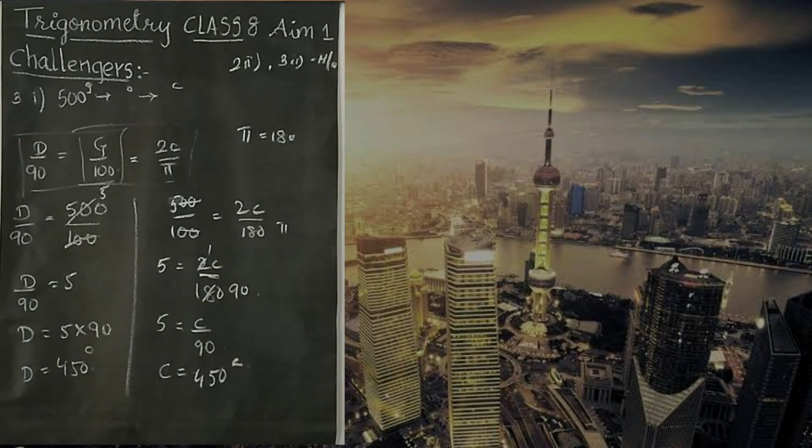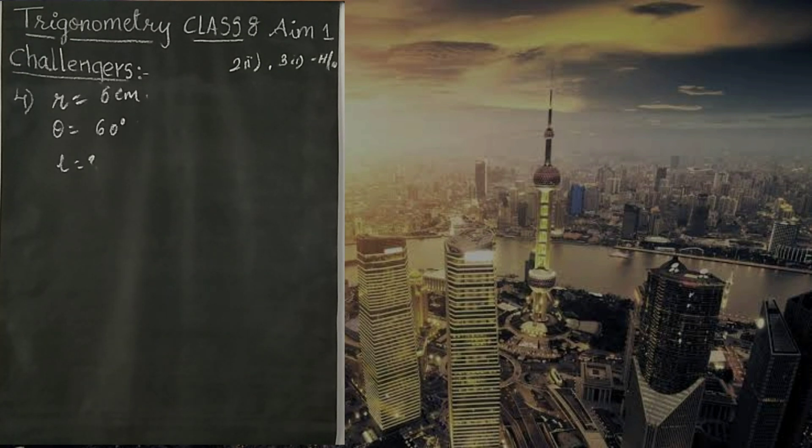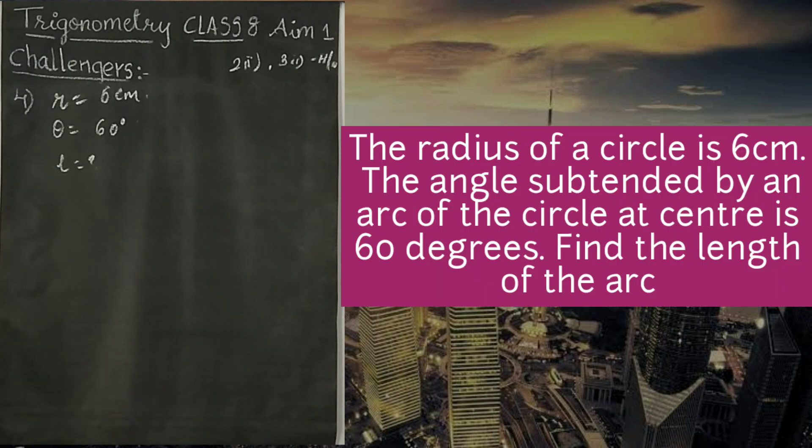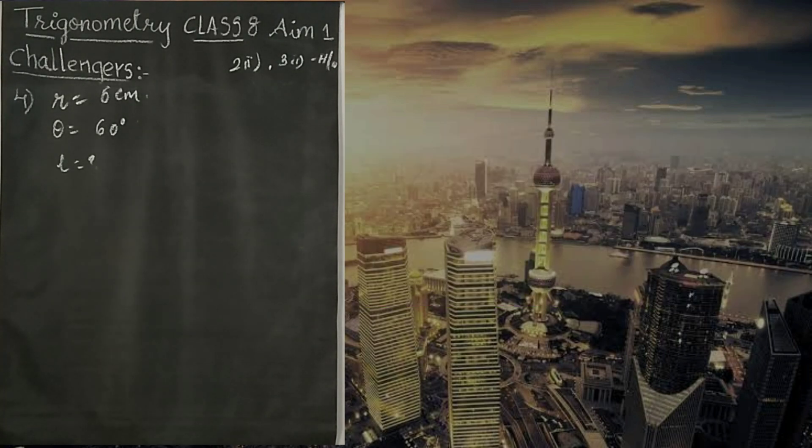Now we will see the fourth one. Fourth question is solving question actually. Once I read it, the radius of a circle is 6 cm. Angle subtended by an arc of the circle at center is 60 degree. We have to find the length of the arc. Given data is R, that means radius, 6 cm and this theta, angle means theta, 60. And length of the arc L, we have to find it.